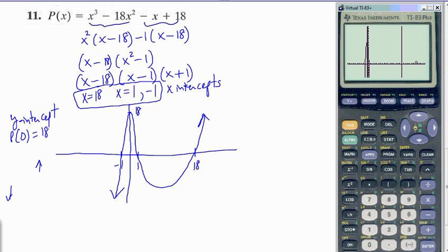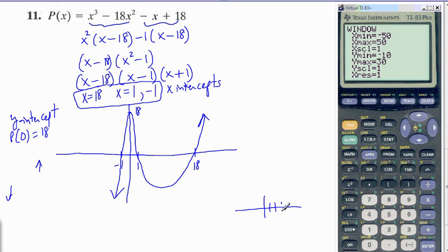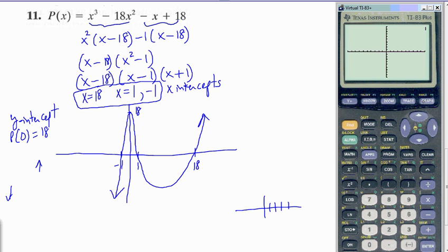You can't tell very well, based on this window, what the graph really looks like. Let's change this to be from negative 50 to 50. And let's change the X scale. That means every one of these notches, the value of every one of those. Let's change it to, say, 5. And let's change the Y min to negative 50. And Y max to 50. And change the Y scale to 5. That might give us a better view.